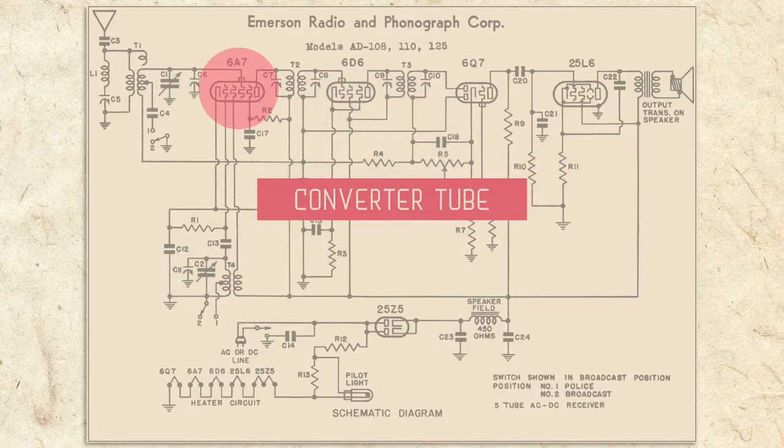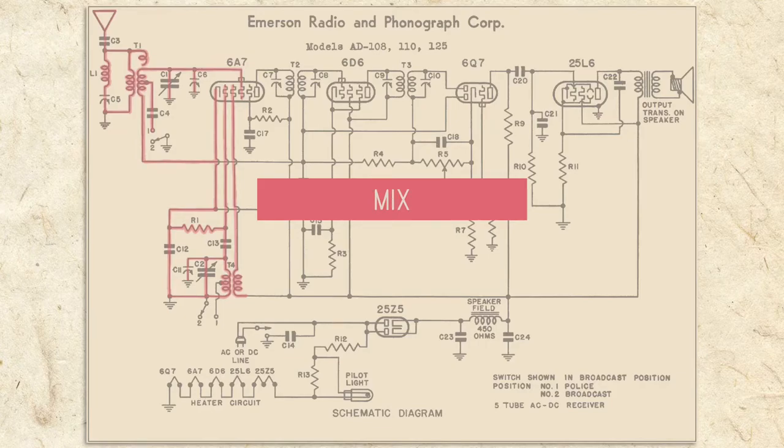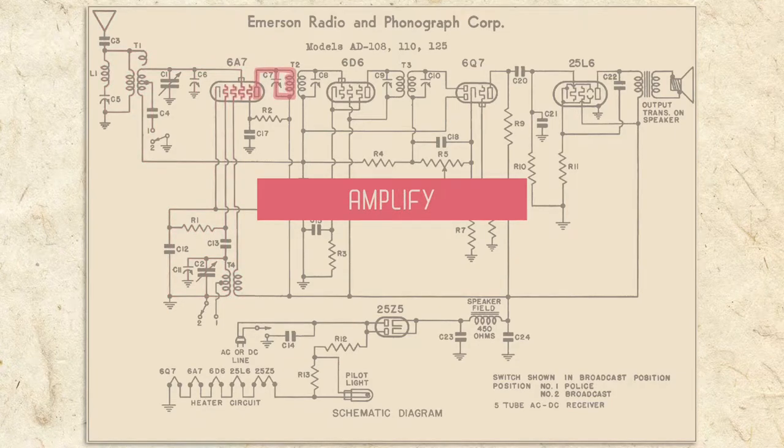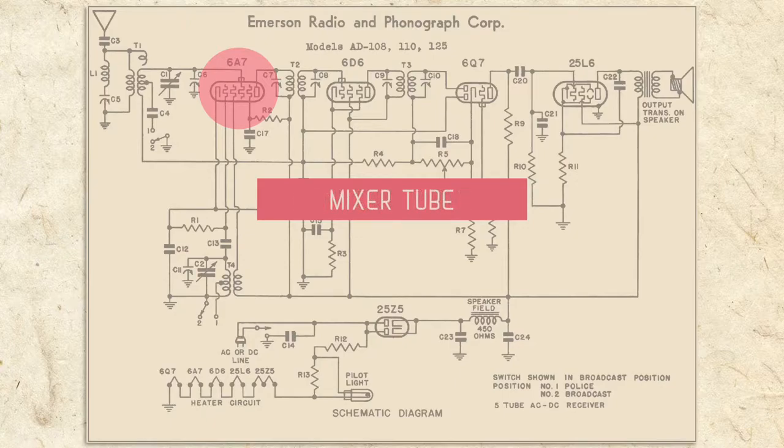The converter is the most complex tube in our radio. It has three jobs: help generate the oscillator signal, mix the oscillator signal with the antenna signal, and amplify the mixed signals. It's called a converter tube because it helps convert the radio station signals into the IF signal. It's also sometimes called a mixer tube because it mixes the oscillator and antenna signals.